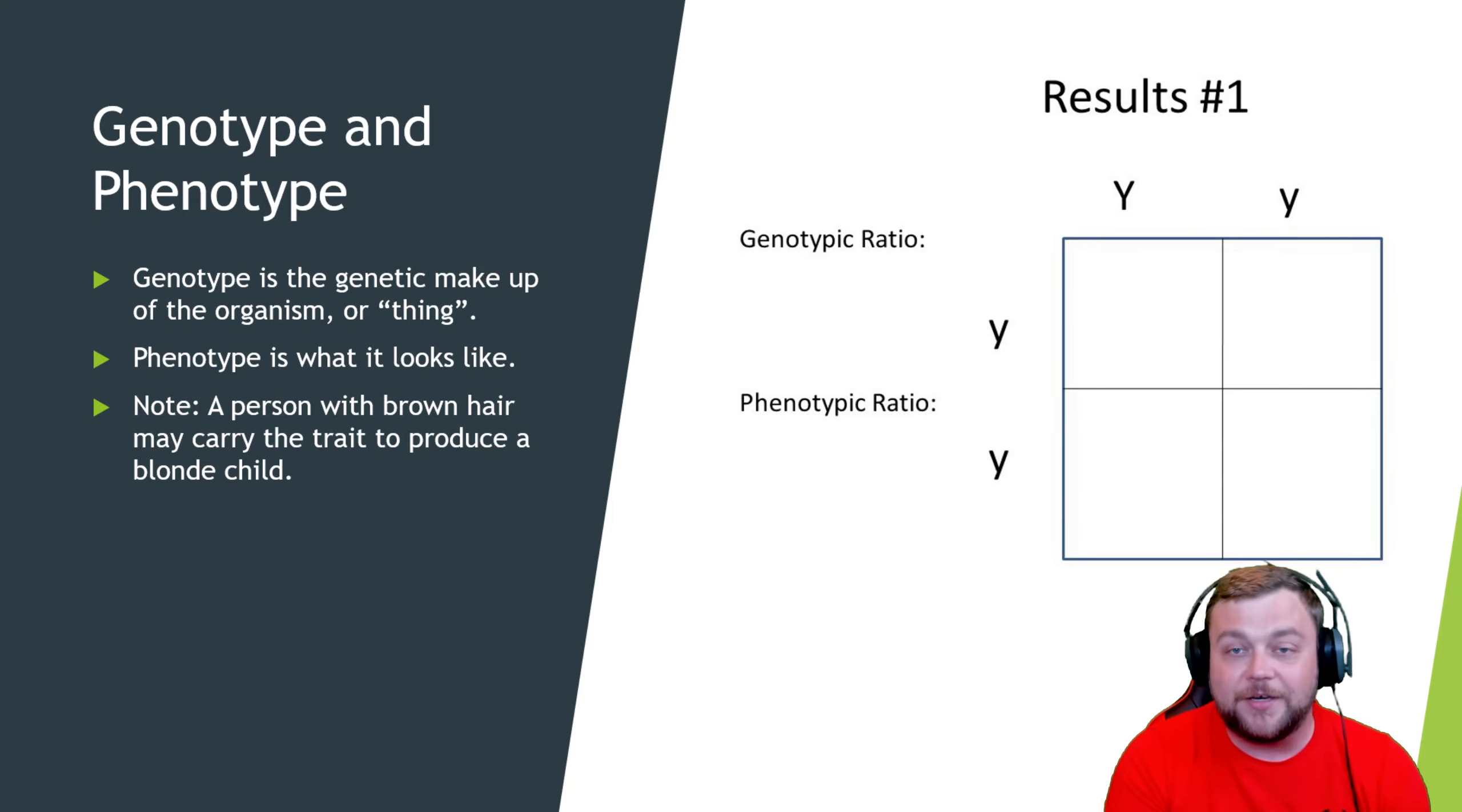I have another slide coming up where you can pause it and try to fill this one out yourself. You have your capital Y and your lowercase y. This person here has one dominant trait and one recessive trait. Then you have this parent over here with two recessive traits. I have blue eyes, so this is a recessive trait. If it was the letter B, maybe that's what represents blue eyes in our Punnett square.